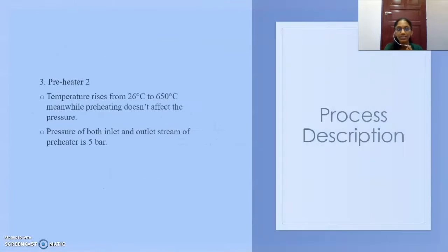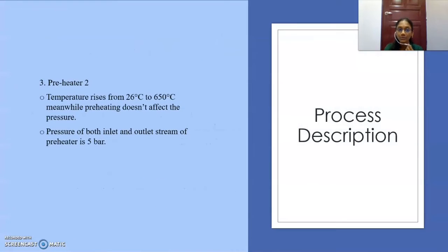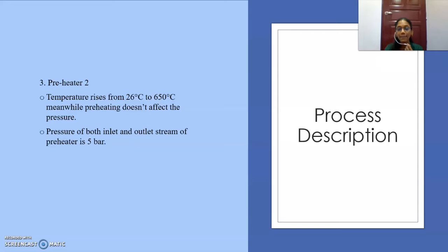The next unit is preheater 2, which increases the temperature from 26 degrees Celsius to 650 degrees Celsius. Meanwhile, the preheating does not affect the pressure, so the pressure will remain constant at 5 bar.